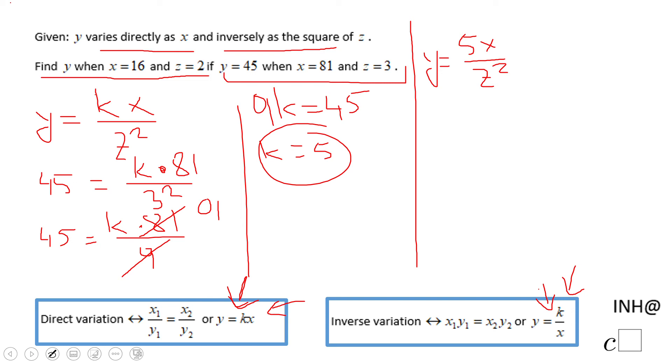Which says find y when x equals 16 and z equals 2. So we're going to rewrite y equals 5 times x, which is 16, and z is 2, so 2 squared. Again here we can simplify first. 5 times 16 over 4. 4 goes into 16 four times.